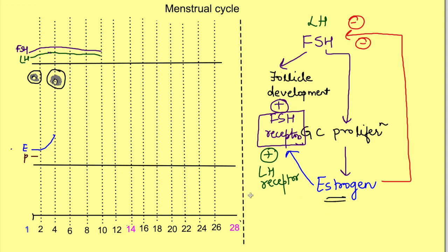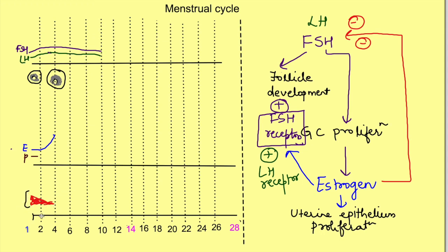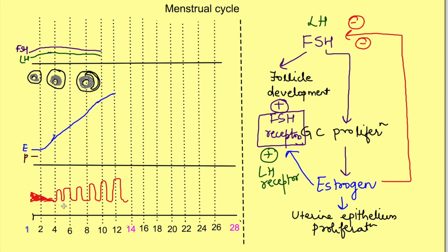Estrogen has an effect on the uterine epithelium, causing its proliferation. From days 0 to 4 there is shedding, but after that the thickness of the uterine epithelium increases — this is known as the proliferative phase, occurring due to the effect of estrogen. Despite the negative feedback causing FSH levels to fall, the upregulated FSH receptors allow FSH to continue acting on the follicles, causing further follicular development and maturation, with appearance of the antral cavity and continued granulosa cell proliferation releasing more estrogen.